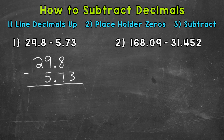That's going to line up all of our places — the hundredths, tenths, ones, whatever places you're working with within the problem. The problem does look a little offset. The 5 and 73 hundredths goes further to the right than the 29 and 8 tenths. That's okay. The most important part is we have our decimals lined up.